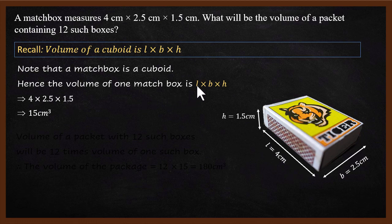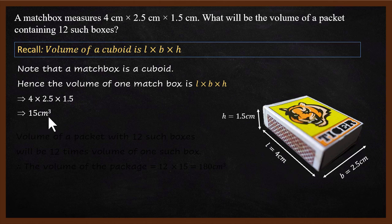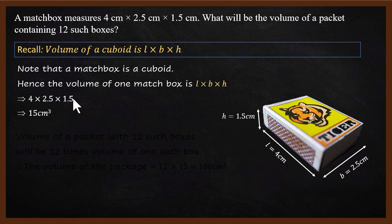This is given by 4 multiplied by 2.5 multiplied by 1.5. If you simplify this, 4 multiplied by 2.5 gives 10, and 10 multiplied by 1.5 gives 15. So we get 15 centimeter cube.